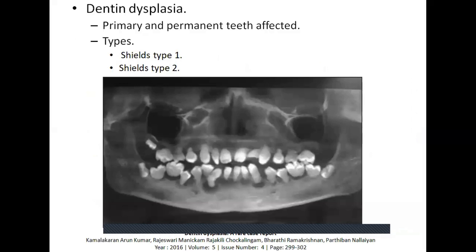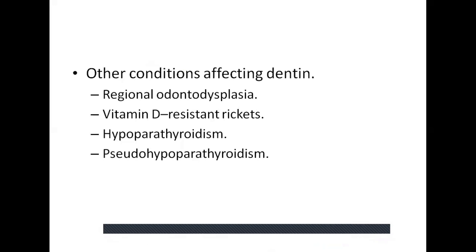Dentin dysplasia occurs in both primary and permanent teeth and is classified as Type 1, in which there is normal crown anatomy, color closer to normal, short pointed roots, absent pulp chambers for both primary and permanent teeth, and multiple periapical radiolucencies. Type 2 has primary teeth appearing similar to dentinogenesis imperfecta, while permanent teeth have normal color, thistle-tube shaped pulp chambers, and no periapical radiolucencies. Other conditions affecting dentin include regional odontodysplasia, vitamin D-resistant rickets, hyperparathyroidism, and pseudohypoparathyroidism.